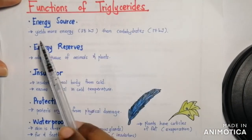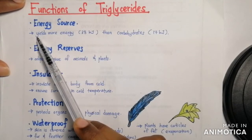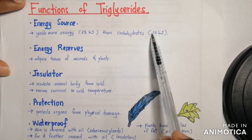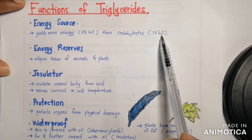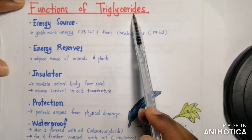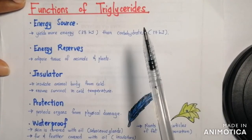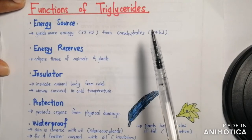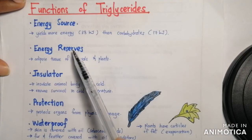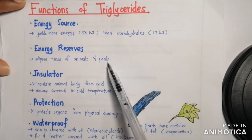The functions of triglycerides: they act as an energy source, providing 38 kilojoules of energy per gram compared to carbohydrates which only give 17 kilojoules. This means lipids or triglycerides act as long-term energy storage, compared to carbohydrates which act as short-term energy storage, and also serve as an energy reserve stored in the adipose tissue of animals and plants.